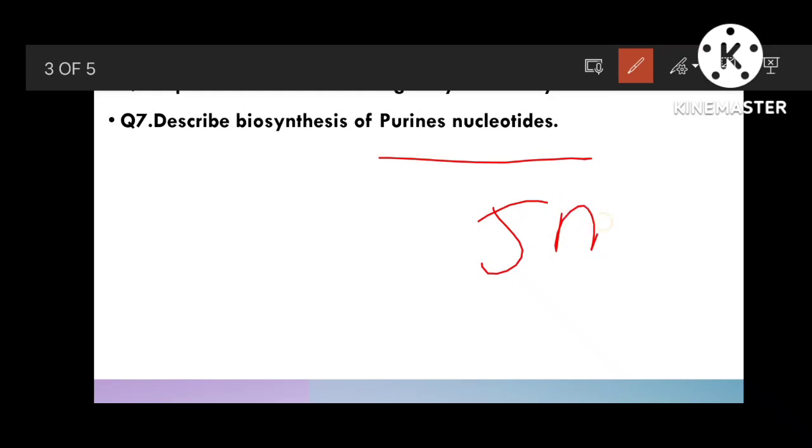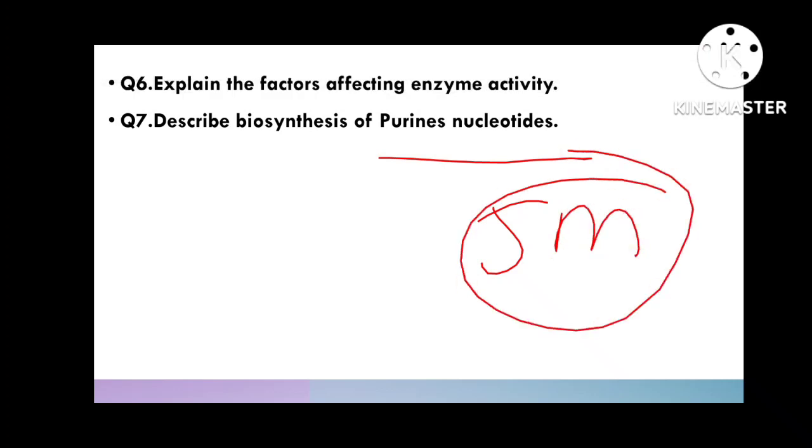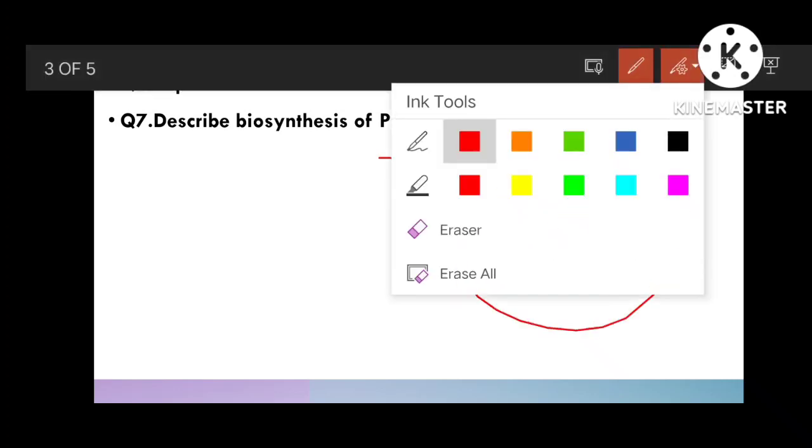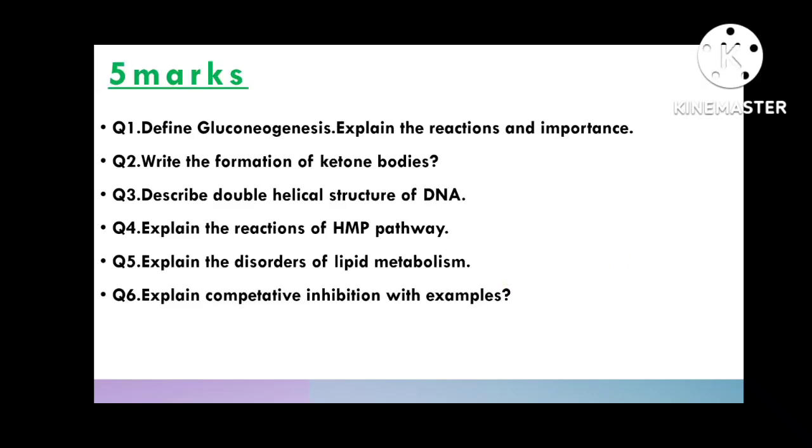Next, define gluconeogenesis, reactions, and importance. You have to write what gluconeogenesis is - formation of glucose from non-carbohydrates like amino acids, lipids, non-carbohydrate materials. Write that sentence, then go for the cycle, then write reactions and importance of gluconeogenesis.